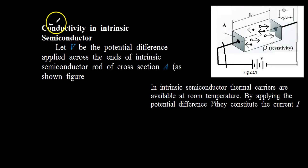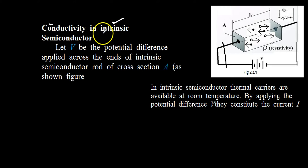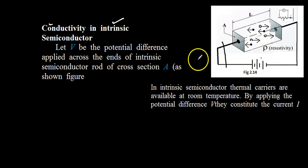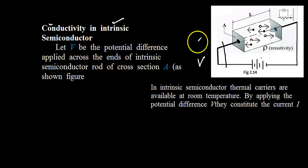Today we are going to find the expression of conductivity in case of the intrinsic semiconductor. An intrinsic semiconductor is one which is very pure, that is free from any impurity. We consider a specimen made up of a semiconductor where a potential difference V is applied across it. The length of the specimen is L and the area of cross section is A.